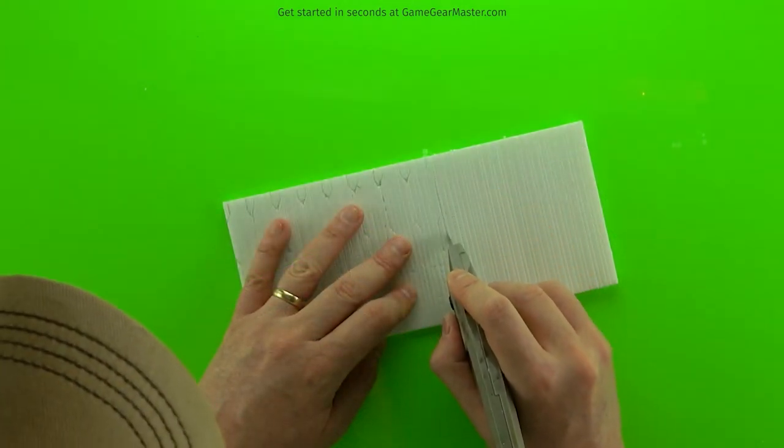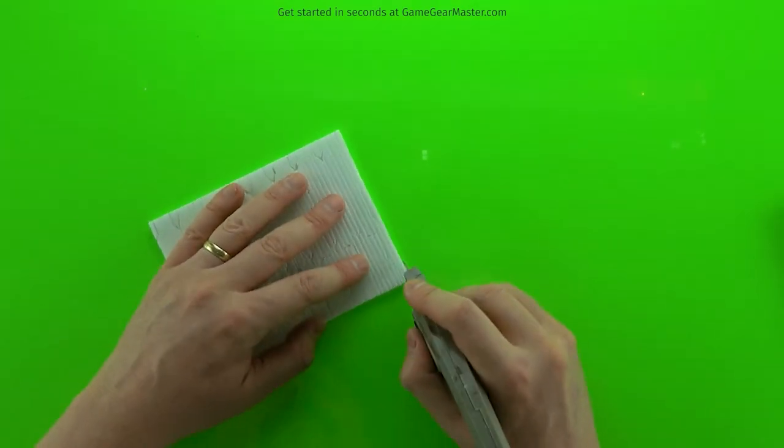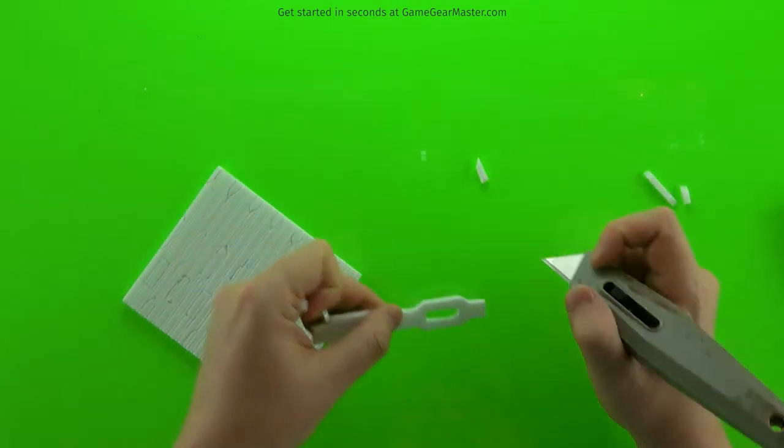By the way, that vertical texture on there is actually made using some new texture tools that we've created in the Terreno Castles and Catacombs manual. So make sure you check those out. And it's just a matter of cutting out where we traced.